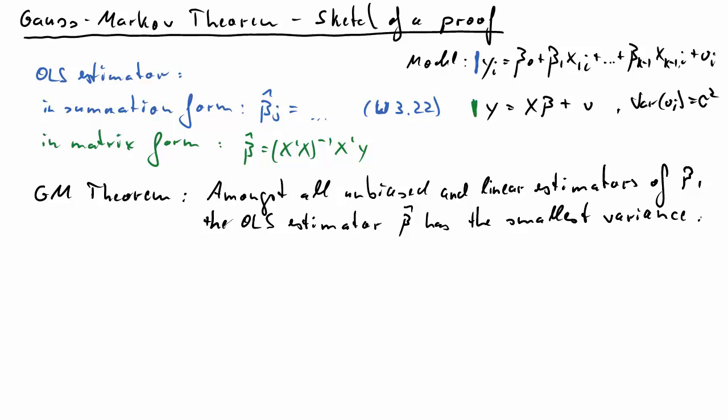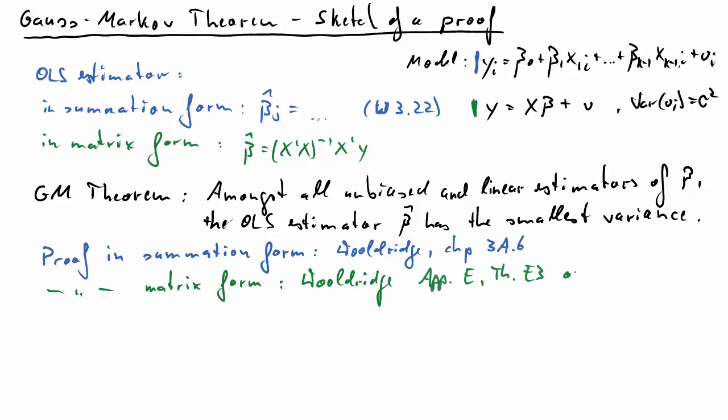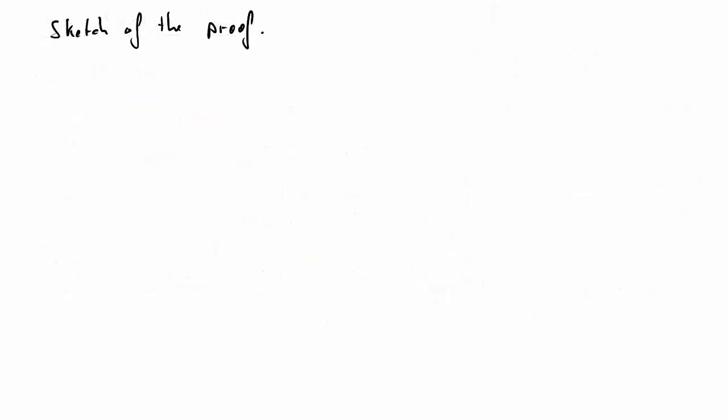So, this is what we want to establish. Now, there are detailed proofs in summation form. You can find that in Wooldridge in the appendix to chapter 3. And in matrix form, you can again find it in Wooldridge. That's in appendix E, E3. Or you can use clips which we have linked for the Manchester students in Blackboard. These are clips by Ben Lambert. And I will link them in the info to this clip.